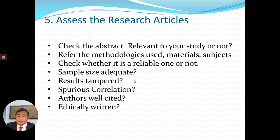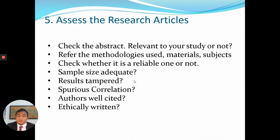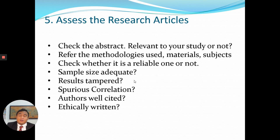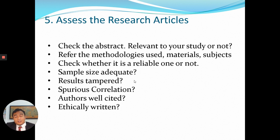After collecting research articles, you need to assess them. First check the abstract to see whether it is relevant. If the abstract is okay, refer to the methodologies used — the materials, subject — and check whether it is reliable. Check the sample size: is it adequate? Watch for results tampering and spurious correlation, which I will explain shortly. Also check whether authors are well-cited — good papers are normally well cited, though there are exceptions. The paper should also be ethically written; you don't want to cite papers with ethical problems.